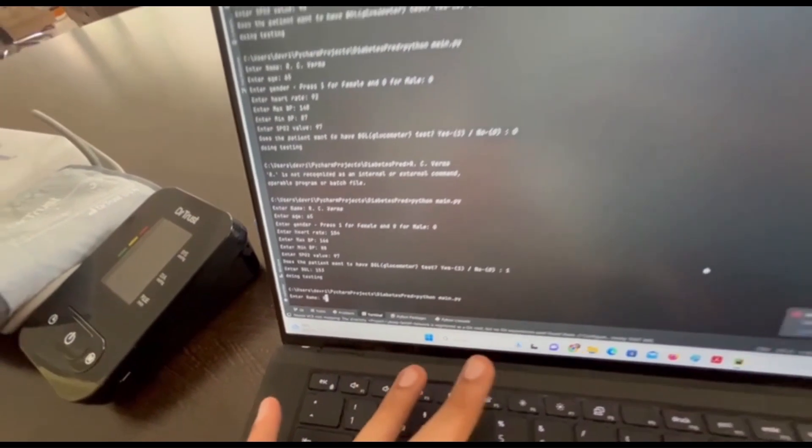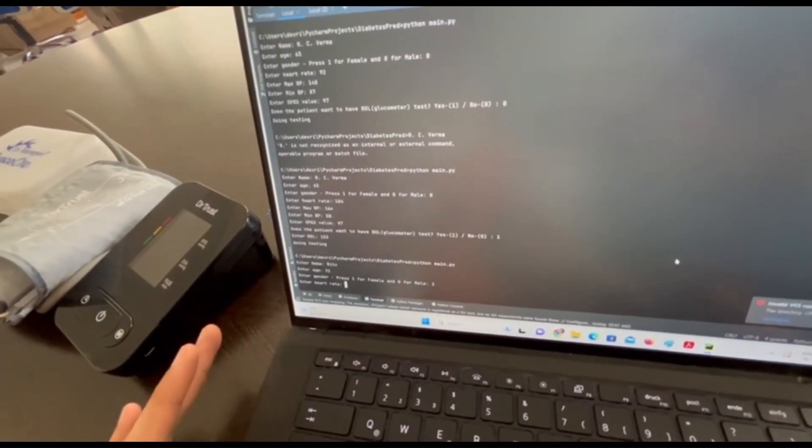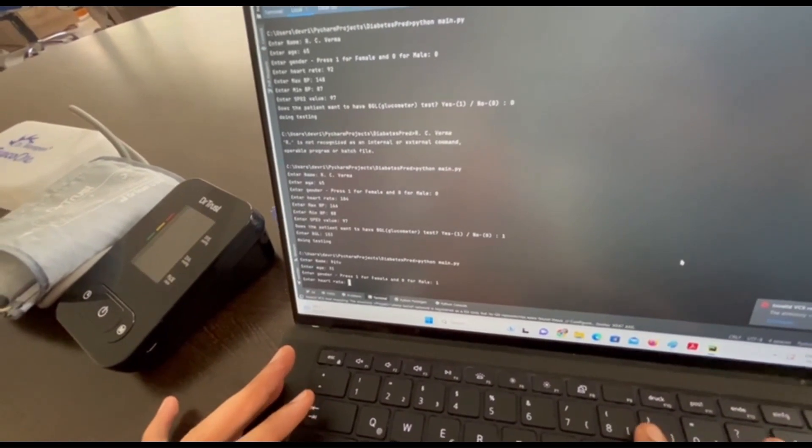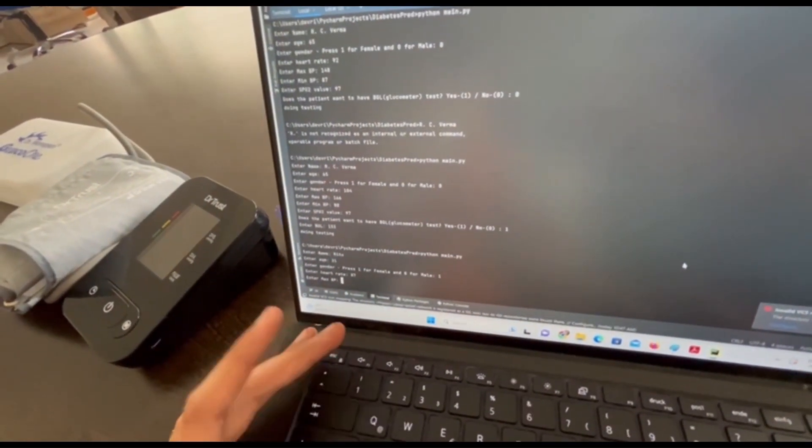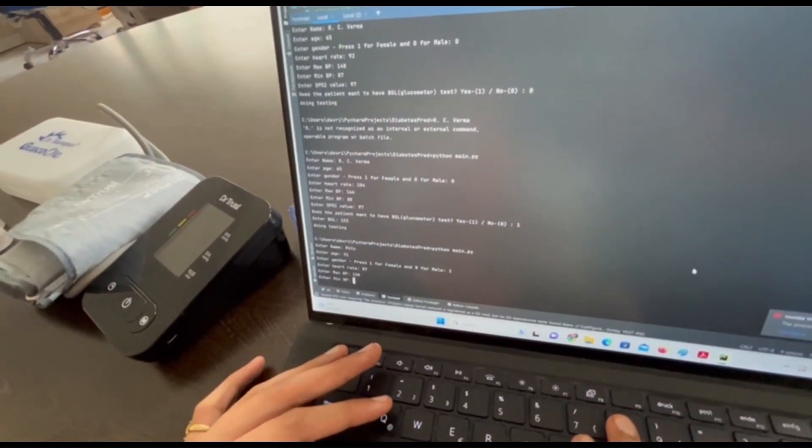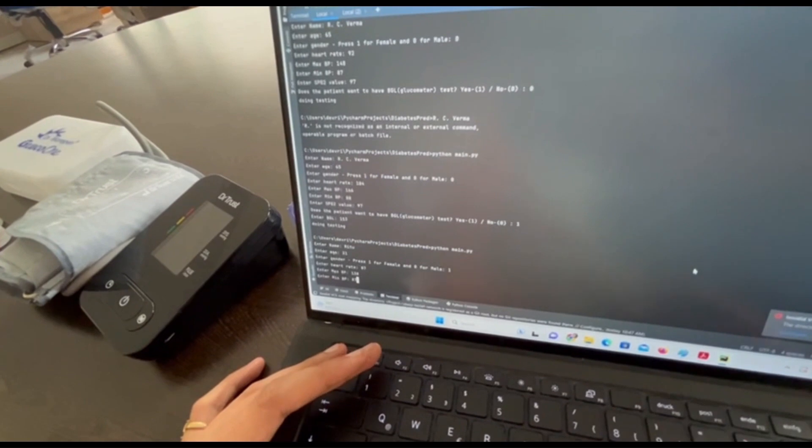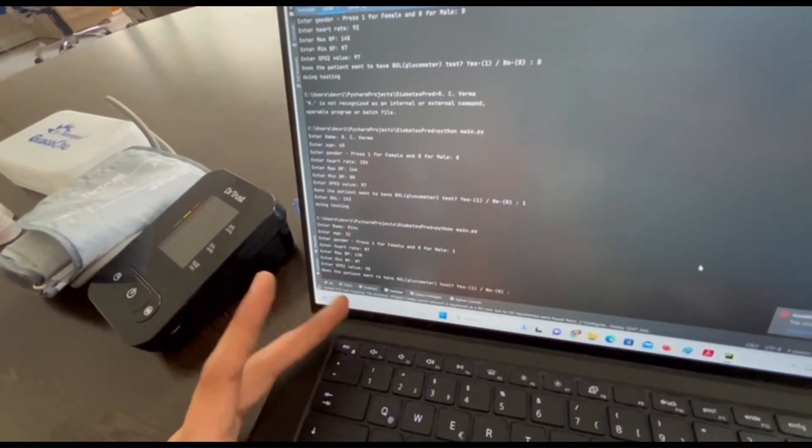I'll move the sensor's data file to the correct directory and run the script for diabetes detection. It's asking me to enter my name which is Ritu, age 31, gender female, heart rate 87, BP was 138 slash 86, SpO2 98.